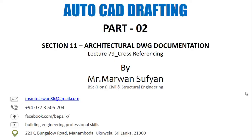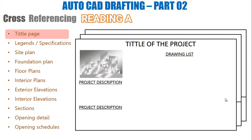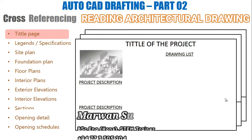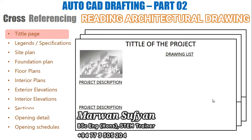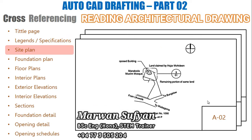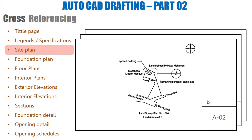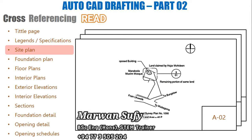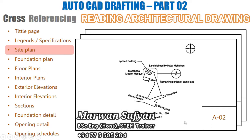AutoCAD drafting cross-referencing. In the set of architectural drawings we have already gone through the title page, legends, and specification. Coming to the site plan, we know the site plan is developed from a site survey plan. Here you can see the reference — it says site survey plan number 1066.